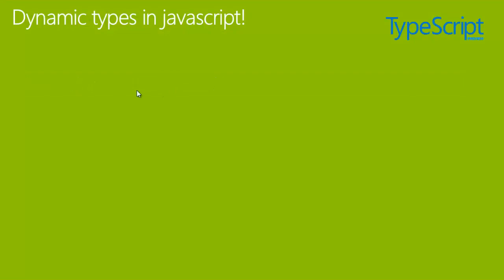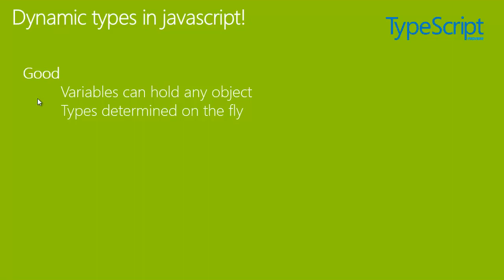An important thing to know is that JavaScript provides a dynamic type system. It has both pros and cons. First, let us see the good ones. Variables can hold any object — that means variables can hold boolean values, strings, integers, or even object literals and other values. It is really cool and flexible. Next, types are determined on the fly in JavaScript. That is an excellent feature — you don't have to specify it explicitly. And next, we get implicit type conversion, and that's a cool feature to have.